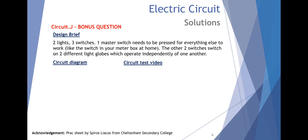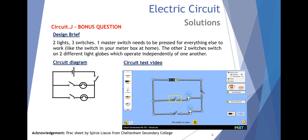Finally, Circuit J, a bonus question. Two lights, three switches. One master switch needs to be pressed for everything else to work, like the switch in your meter box at home. The other two switches switch on two different light globes which operate independently of one another. So nothing happens with the two independents. Master switch on. This one works. This one works.